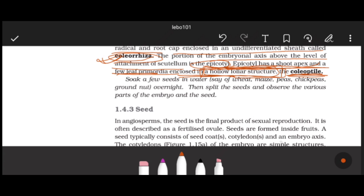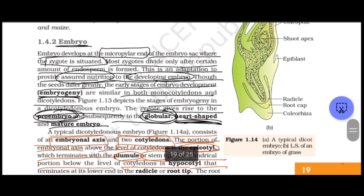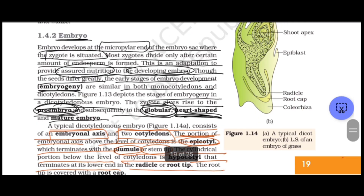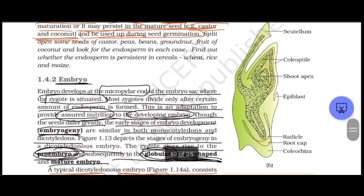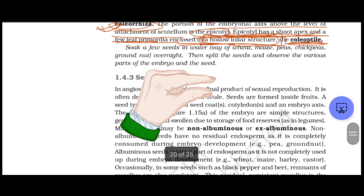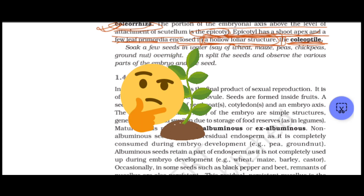So to summarize monocot grass embryo: coleoptile is a hollow foliar structure covering the shoot apex; the scutellum is the single cotyledon at the top; radicle and root cap are covered by the coleorhiza, which is an undifferentiated sheath. We have now covered the embryo of grasses. The next topics - seed and apomixis - will be covered in the next class.